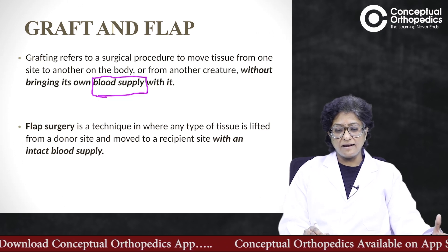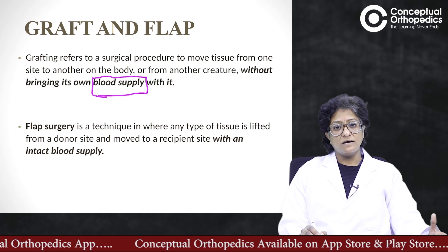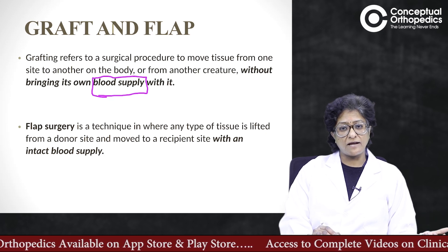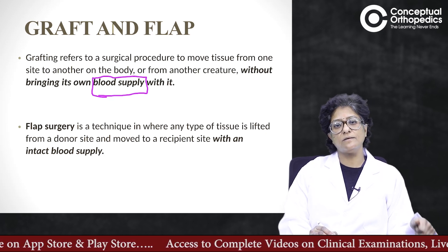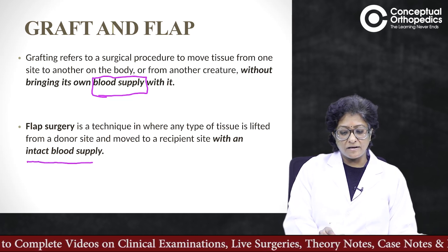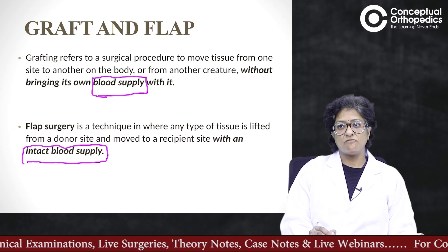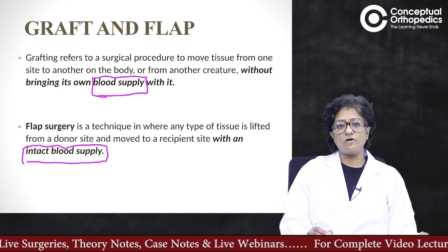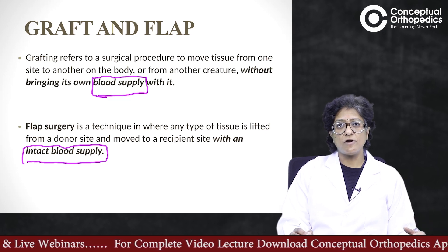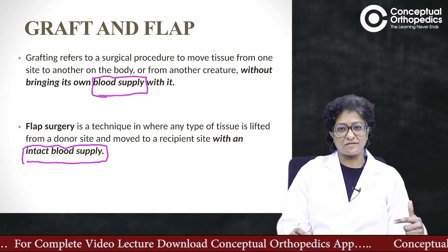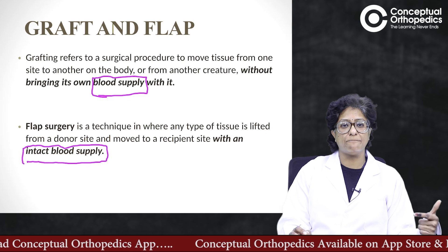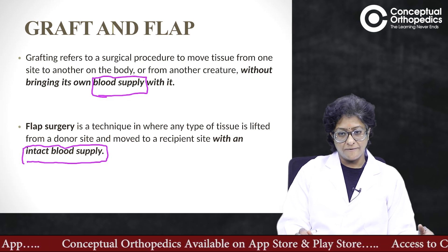A flap, whereas, is a technique in which you take the tissue either attached to its blood supply by turning it around, or if you are taking it to a distant site you reconnect the blood vessel supplying the flap. That means the flap is tissue that is supplied by its own blood supply. For example, from the thigh, if you are taking a graft you take a piece of skin. If you are taking a flap, you take that piece of skin attached to its blood supply — for instance, with a branch of the lateral circumflex femoral artery and vein.